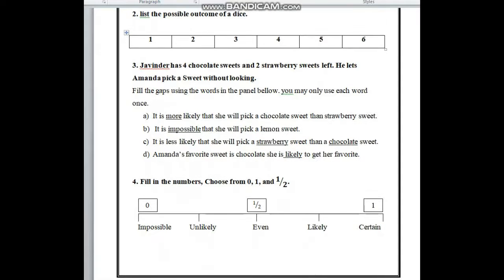In number 3, Javinder has 4 chocolate sweets and 2 strawberry sweets left. He lets Amanda pick a sweet without looking. Now fill in the gaps using the words in the panel below. You may only use each word once.